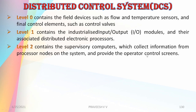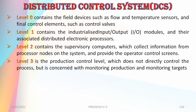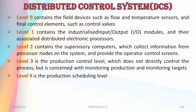Level 3 is the protection control level which does not directly control the process, but is concerned with monitoring production and monitoring targets. Level 4 is the final production scheduling level where production scheduling is done.